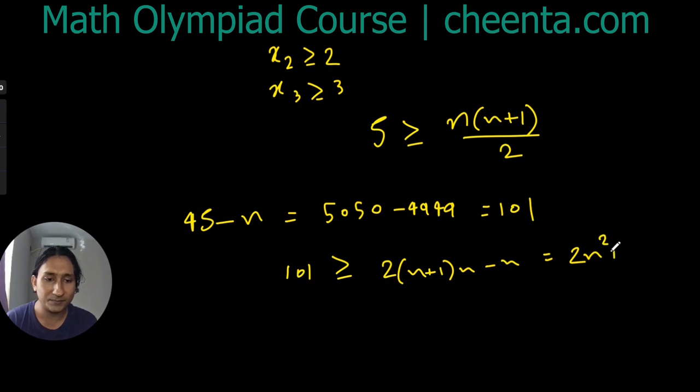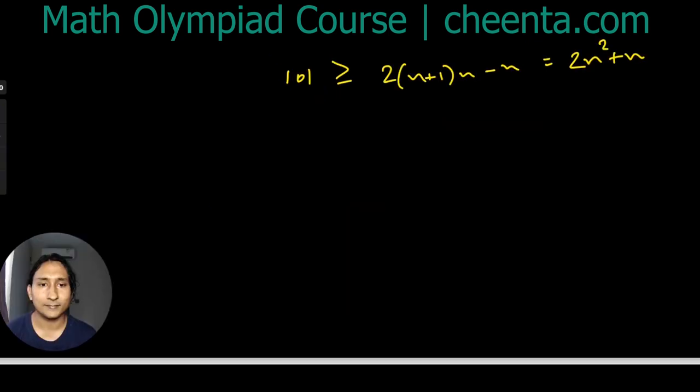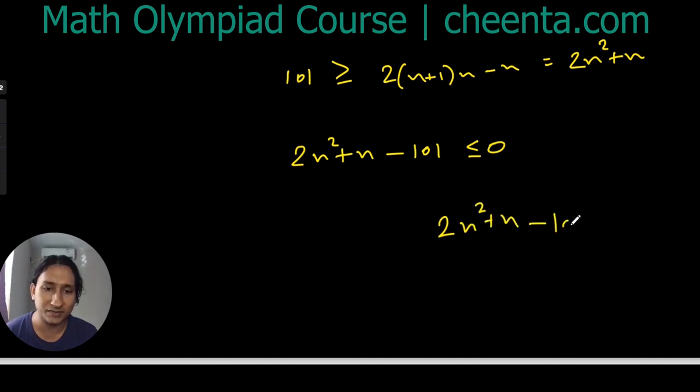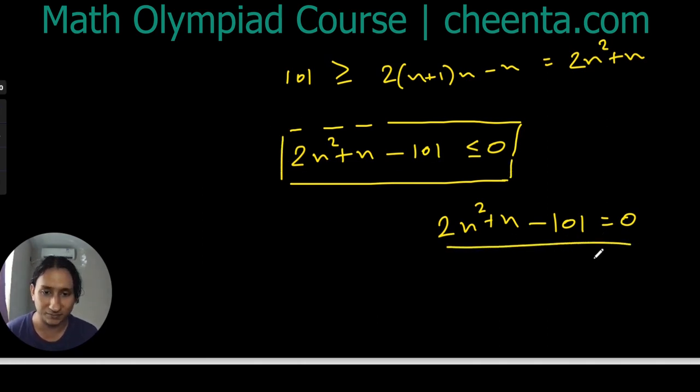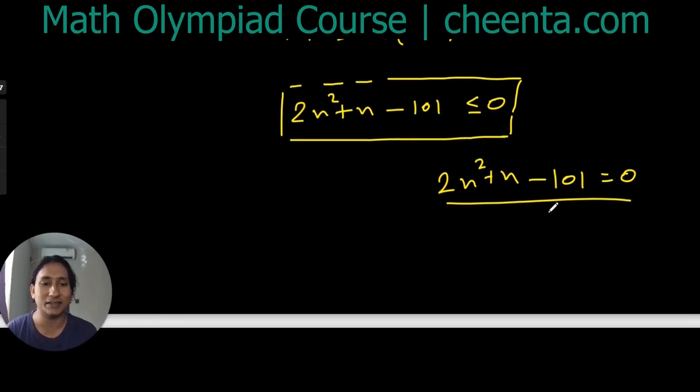Which is 2n² + n. Now we are going to solve this inequality. This can be written as 2n² + n - 101 ≤ 0. That means if we find the roots of the equation 2n² + n - 101 = 0, then the permissible values of n actually have to lie between the two roots of this equation. That's standard inequality theory.